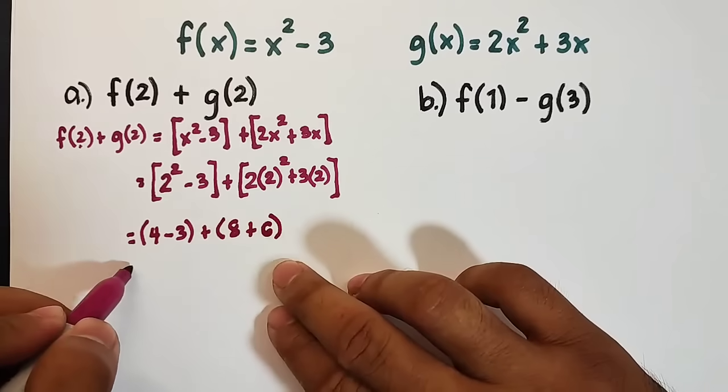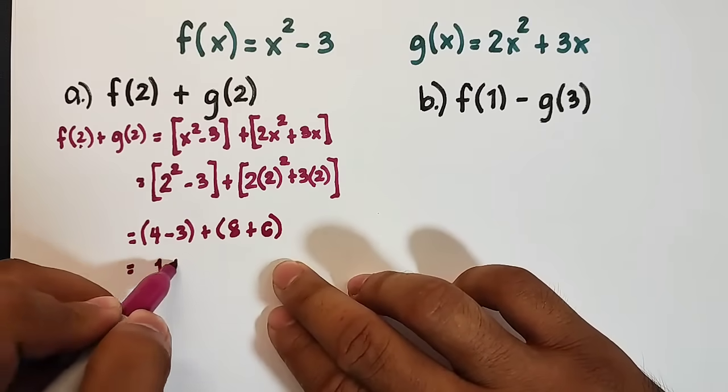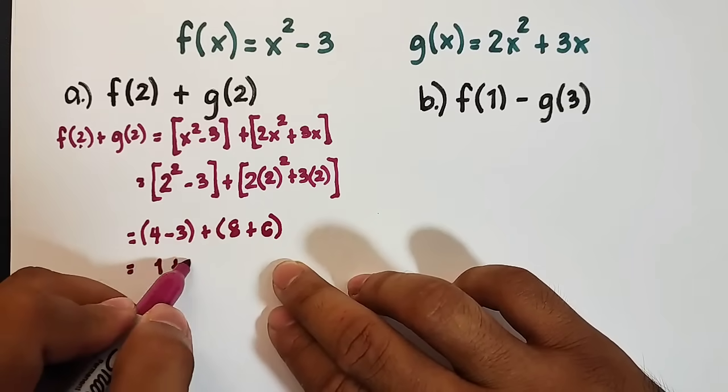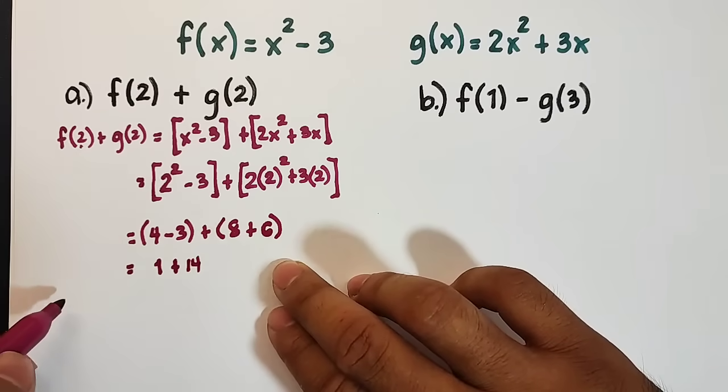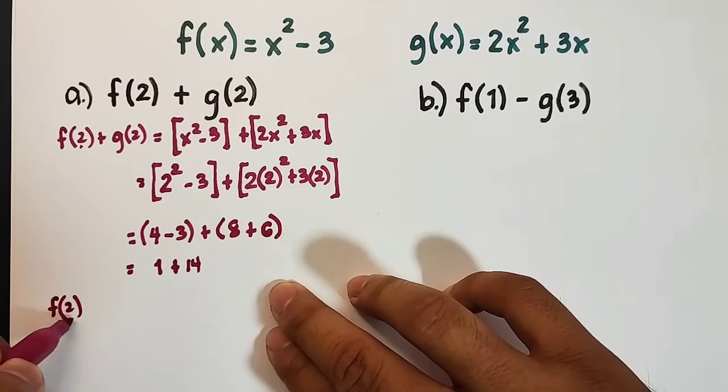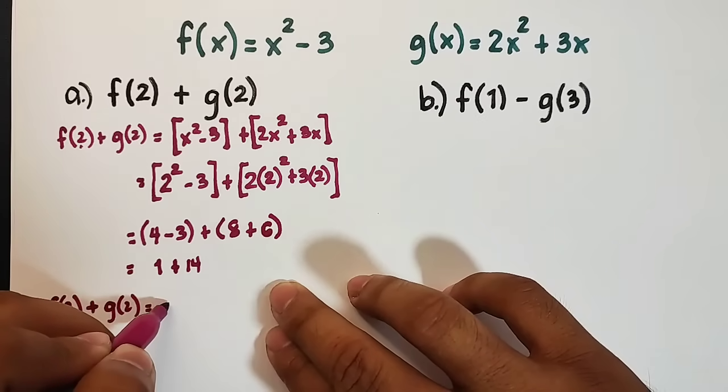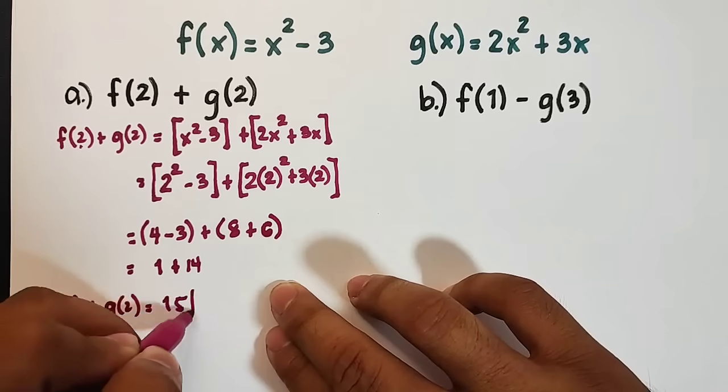So what we have now is 2² which is 4, minus 3, plus 2² is 4 times 2, that equals 8, plus 3 times 2, which equals 6. Simplify the parenthesis: 4 - 3 is 1, plus 8 + 6 which is 14. So the value of f(2) + g(2) is equal to 1 + 14, which equals 15.